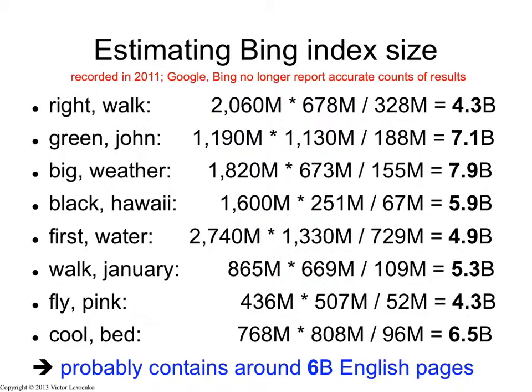So, right and walk. In 2011, right had 2 billion matches on Bing, and walk had 678 million. And right and walk together occurred in 328 million pages. So if I plug that in, assuming no correlation at all, I get approximately 4.3 billion pages as the index size for Bing. So that's just one pair. Now, let's repeat it many times.